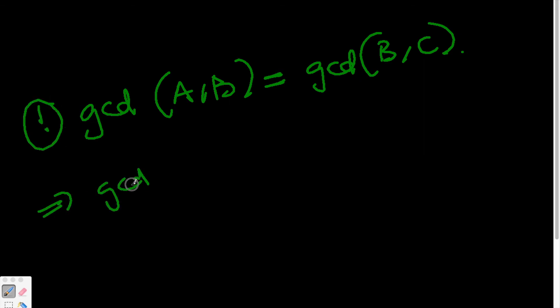Which tells us that the gcd(A,B) equals the definition of gcd(B,C), which is A-B.